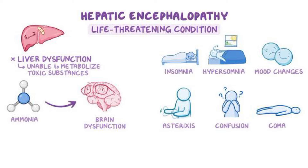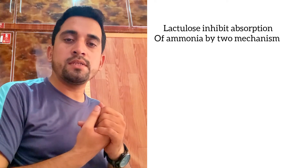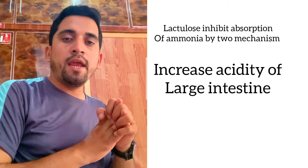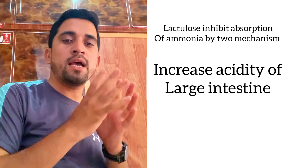When the liver is damaged due to different medical conditions, this ammonia affects our brain dangerously. So our goal is to decrease the absorption of ammonia from our large intestine into the blood, to control the effect of ammonia on our brain. Lactulose inhibits ammonia absorption through two mechanisms. First, it makes our large intestine more acidic, and in this acidic condition the ammonia becomes ionized, and in ionized form the ammonia is not absorbed into our blood circulation.